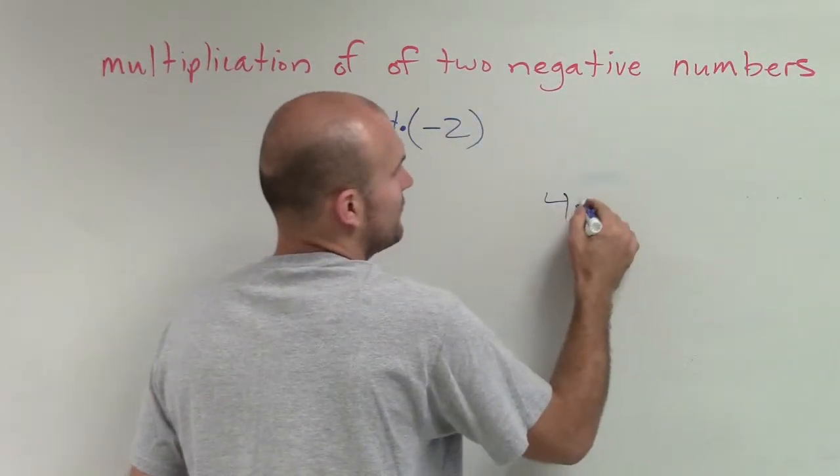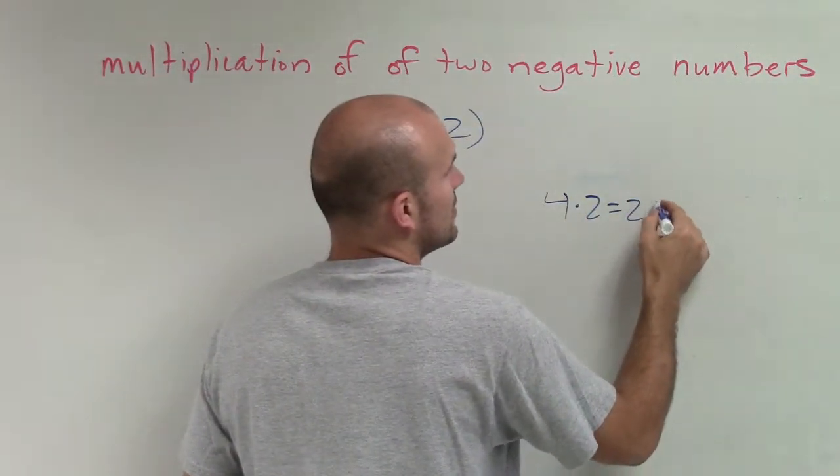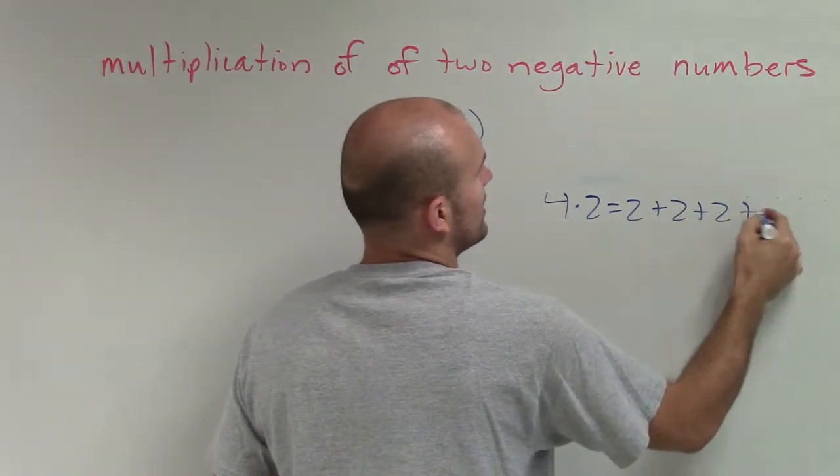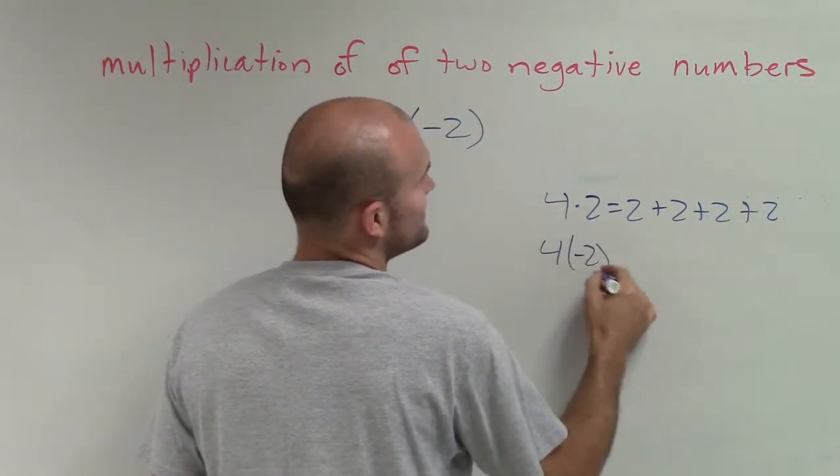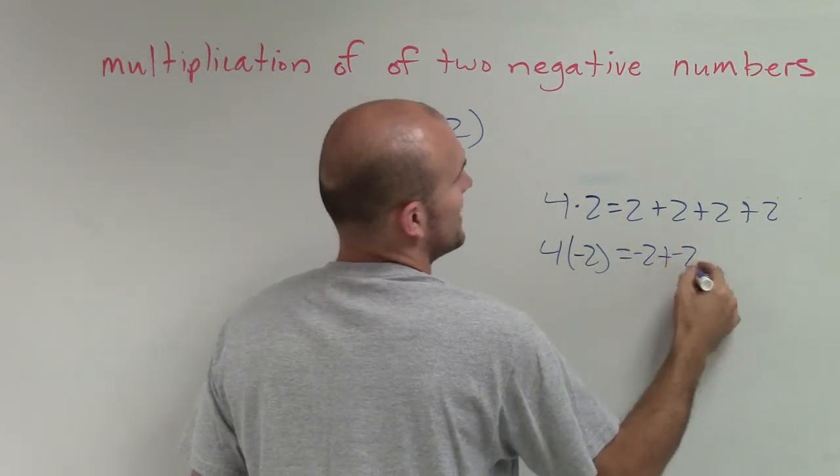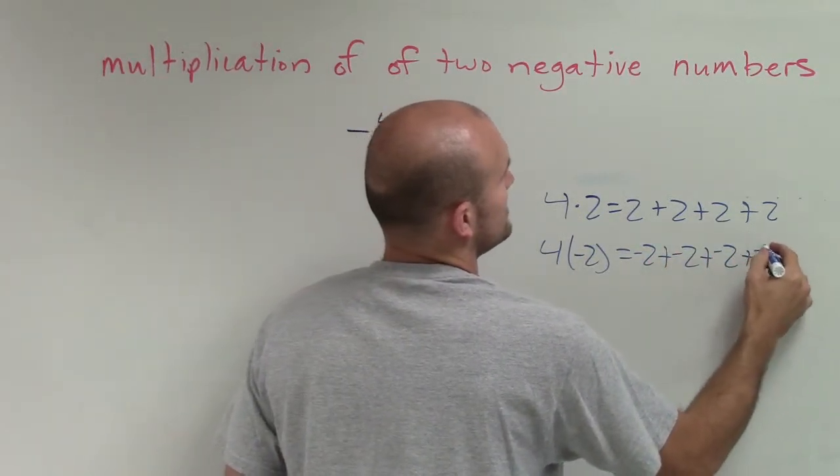Let's just do it here. When I said 4 times 2, that meant 2 plus 2 plus 2 plus 2. 4 times negative 2 equaled negative 2 plus negative 2 plus negative 2 plus negative 2.